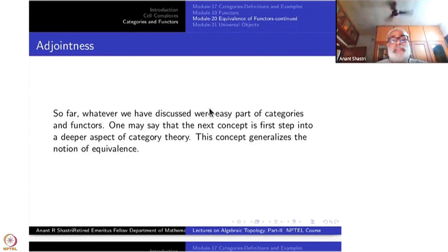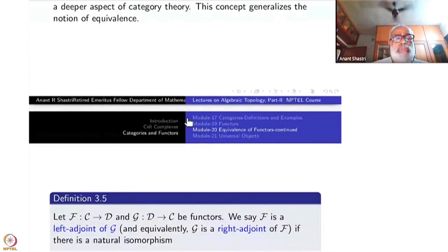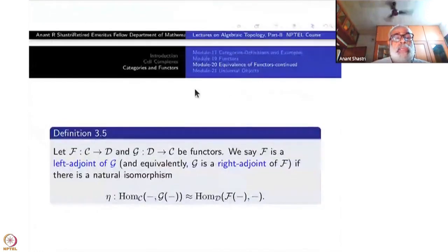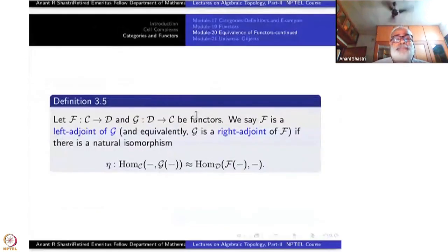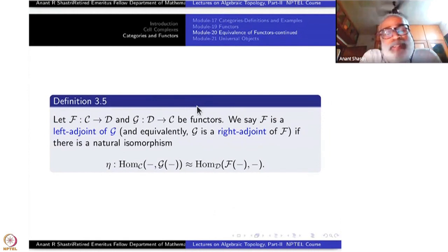Let us just make a beginning here; interested readers can pick it up from elsewhere. I have given a reference — that is a good book you can read from; there are many other books also. So: adjointness. I am going to define two things simultaneously: left adjoint and right adjoint. You can have a very vague picture of a homomorphism having a left inverse and right inverse — it is similar to that. Having said that, the similarity ends there; this is much more subtle and stronger.